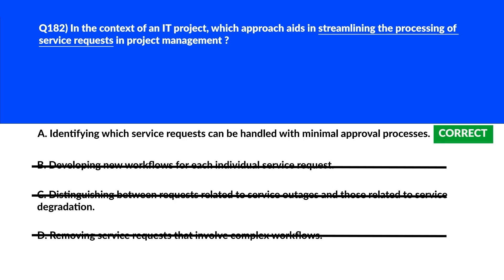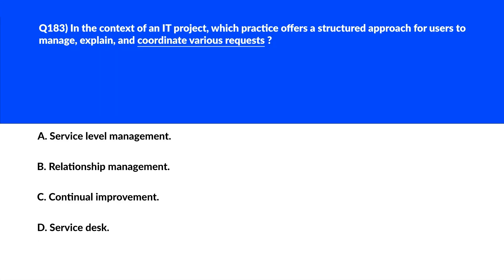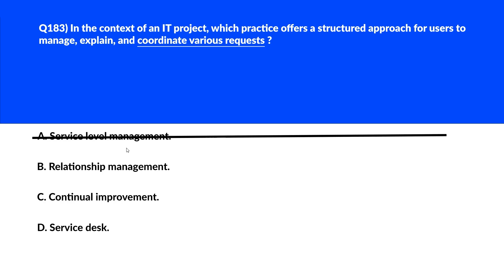We'll lock option A as the right choice. This question is about which practice offers a structured approach for users to manage, explain, and coordinate various requests. Option A says service level management. Service level management focuses on maintaining and improving quality of service but doesn't handle the organization of user requests — remove it. Option B says relationship management. Relationship management is about maintaining positive relationships with stakeholders, not handling user requests — remove it.